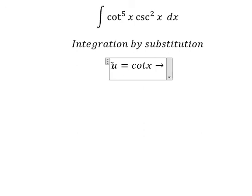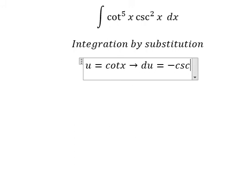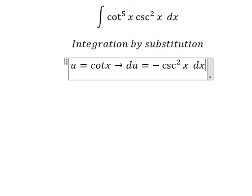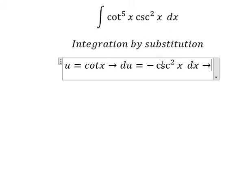And after that, we take the first derivative of both sides. And we have negative cosecant squared x dx. Because we don't have a negative here, I will move the negative to the left.